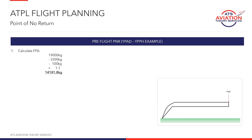Step 1 is to calculate the flight fuel available. You should be familiar with this after the last video. We used 19,000 kilos of fuel, subtracted the fixed reserve of 3,300, took off 100 kilos taxi in, and then divided by 1.1 to remove the variable reserve. That gave us a flight fuel available of 14,181.8 kilos.